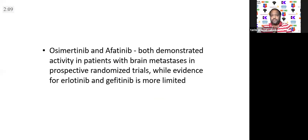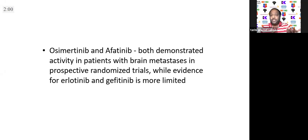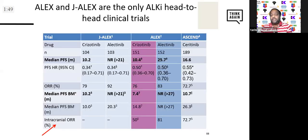To summarize: osimertinib, afatinib, and even first-generation TKIs have all demonstrated activity in CNS disease better than chemotherapy. There is enough data to show they delay the first event of brain progression in patients who did not have baseline brain metastasis at start.